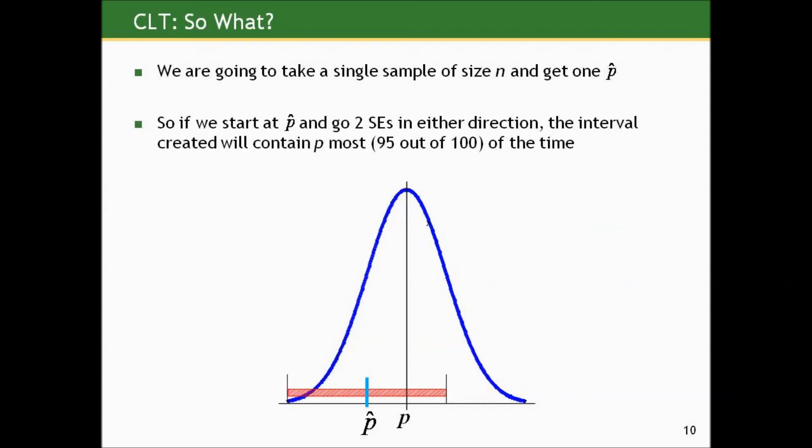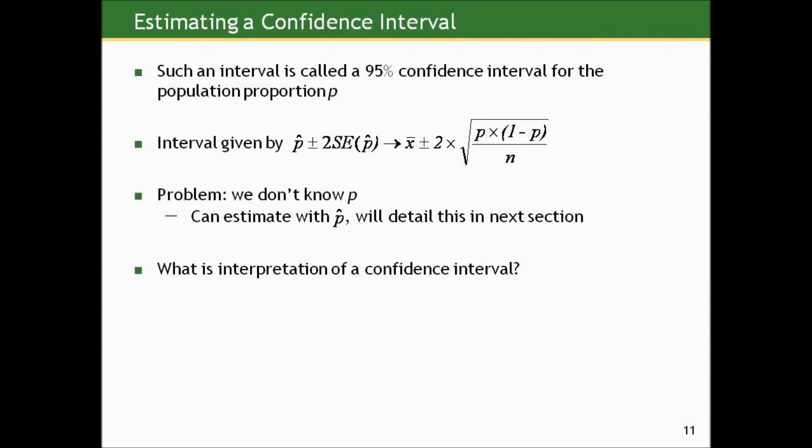So if we do take a single sample, estimate one sample proportion, if we go two standard errors in either direction, we'll create an interval that 95% of the time will contain the true proportion. For 95% of the studies we could do, if we take this approach, create this interval, we'll capture the true proportion. And such an interval is called a 95% confidence interval for the population proportion, p. The interval is given by p hat plus or minus two times the square root of p times one minus p over n. The problem is we don't know p. So how do we deal with the standard error? Well, we can estimate with p hat, and we'll deal with that in the next section.